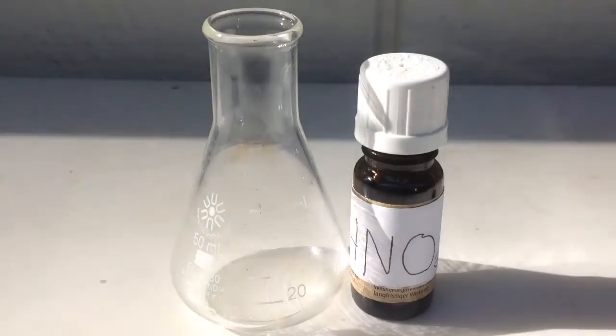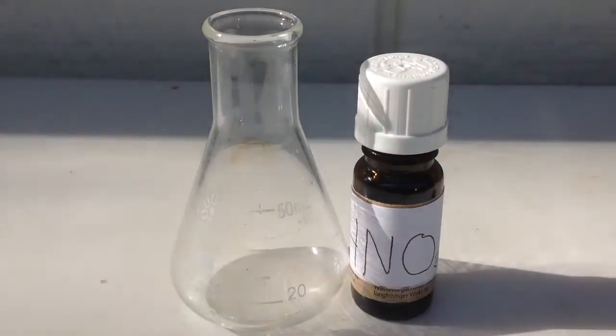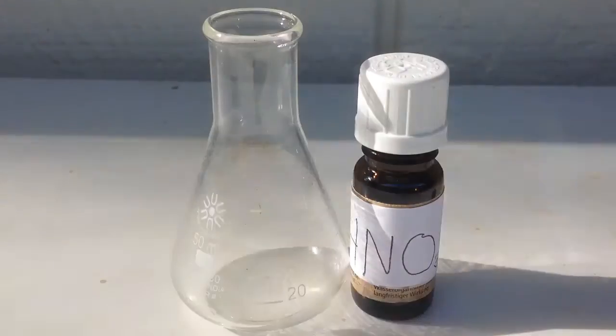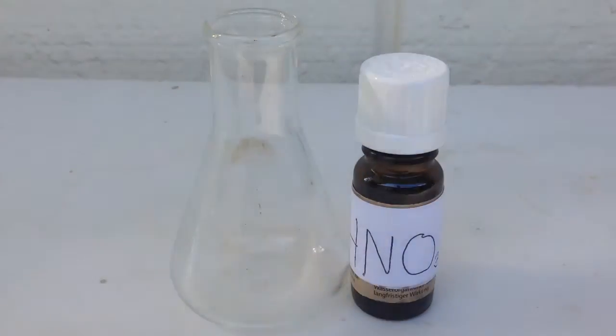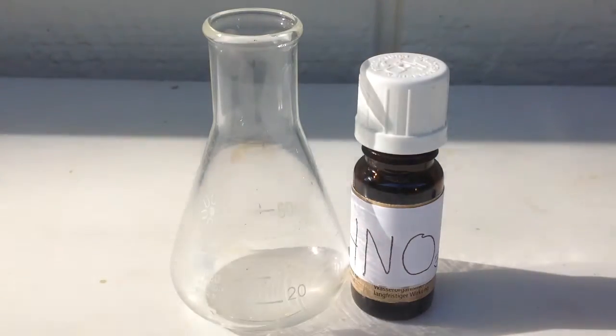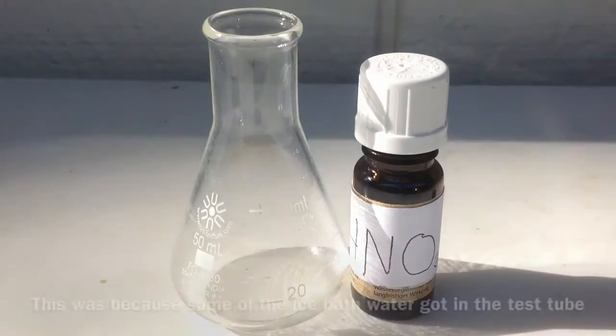The concentration of your nitric acid will vary depending on how long you let the nitrogen dioxide bubble into the hydrogen peroxide or how much hydrogen peroxide you use. Anyway, I think we got about 35 milliliters.